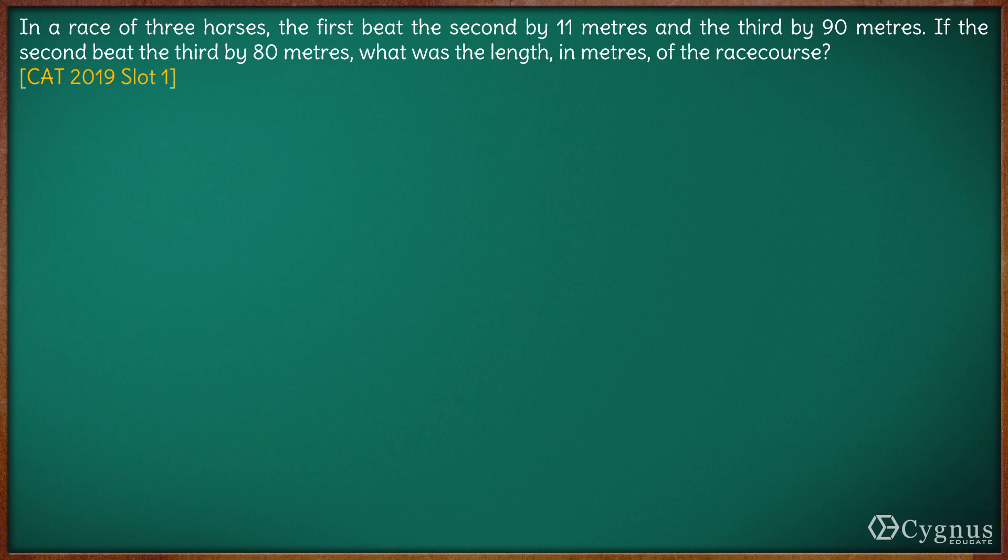Okay, so let's say this is the starting point, the race is from this point till this point. Let's say the three horses are A, B and C. A beats B by 11 meters and A beats C by 90 meters.